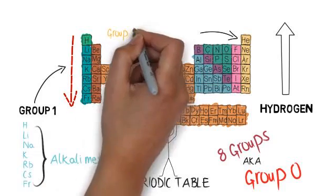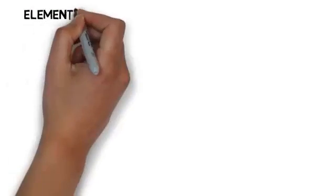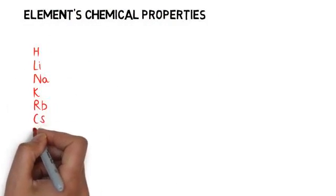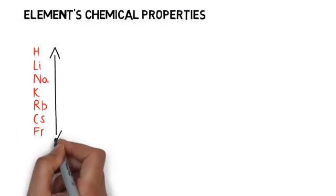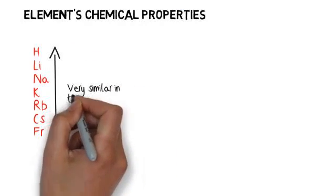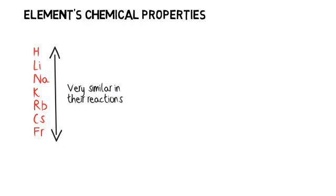The sorting of elements into groups is based on the element's chemical properties. For example, in group 1 all elements are very similar in their reactions, and the period talks about the highest energy level for an electron for that element in an unexcited state.